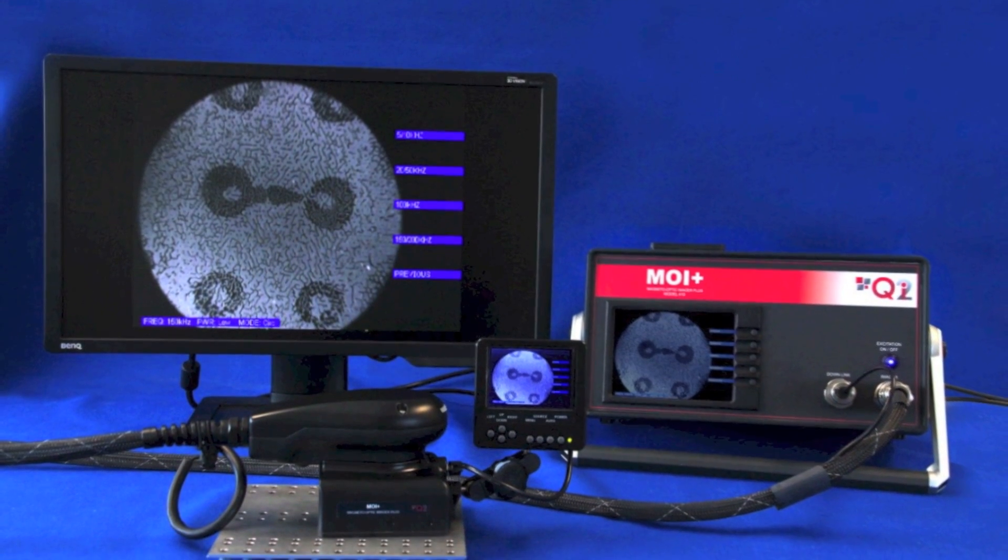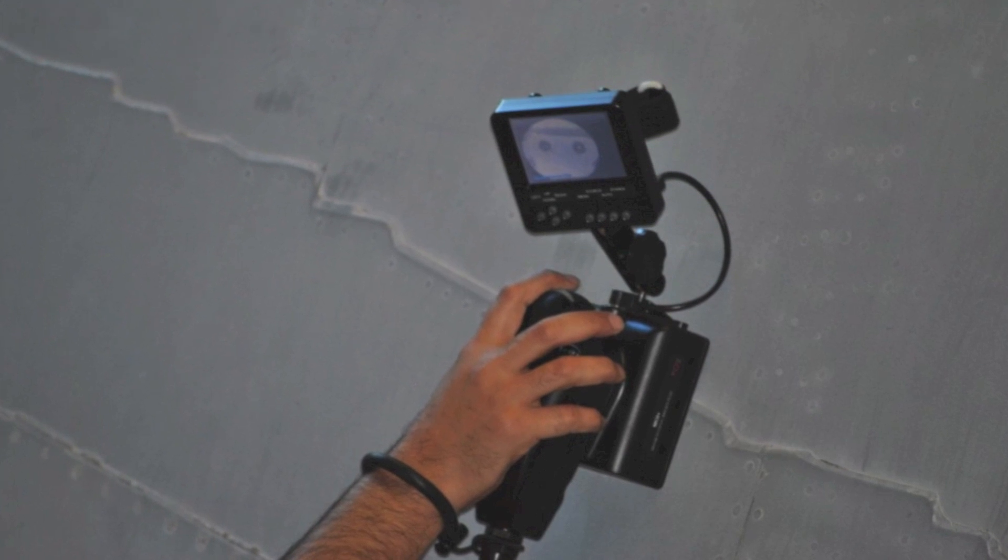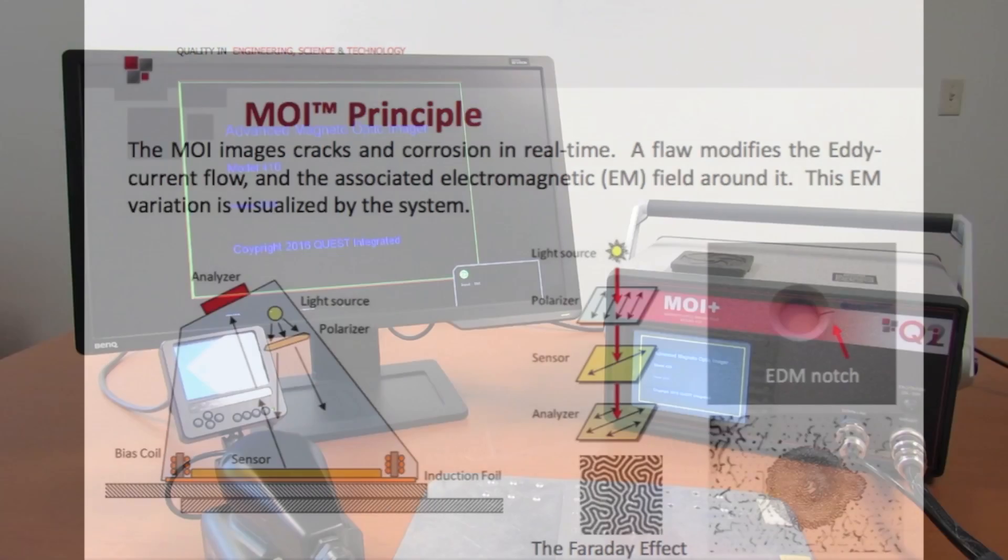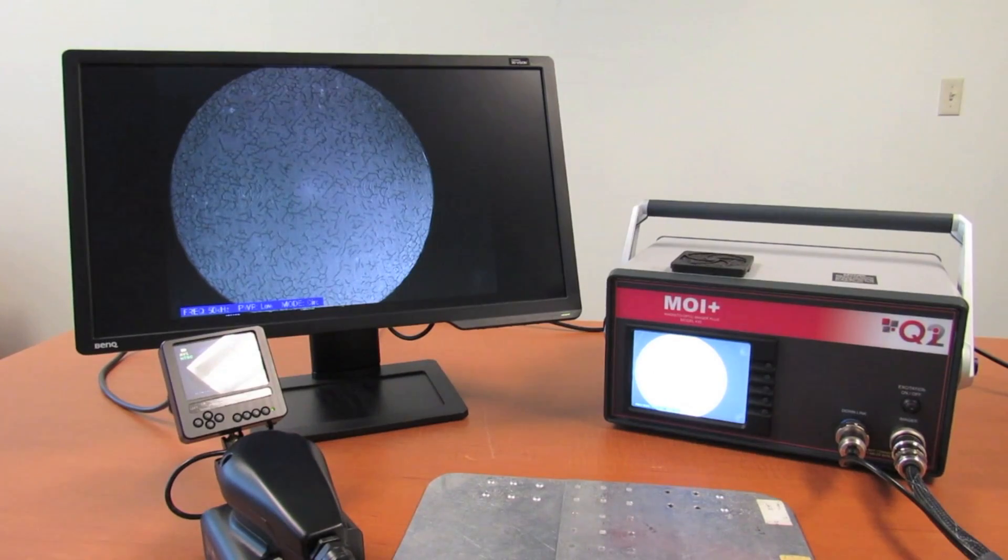QI-2 is excited to introduce our latest and most advanced magneto-optic imaging system, the MOI+. MOI Plus images the magnetic field induced by eddy current to provide real-time feedback detecting surface and subsurface cracks in aircraft skin near fasteners, as well as subsurface corrosion.